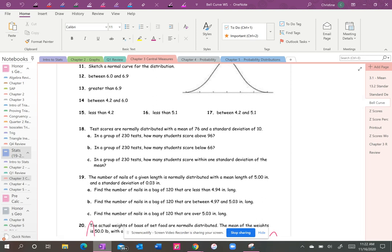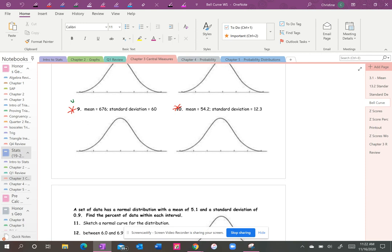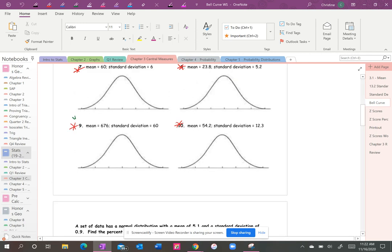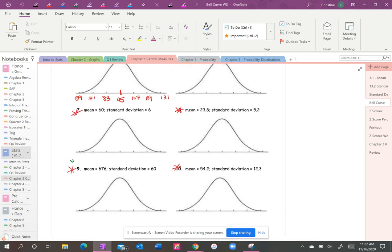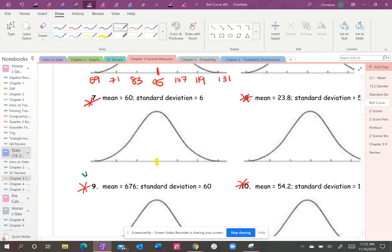Okay, so last week we talked about standard deviation and the empirical rule for the bell curve. So just a quick recap, let's do an easy one, we'll do number seven. Remember the average or the mean, that's going to be written as mu.